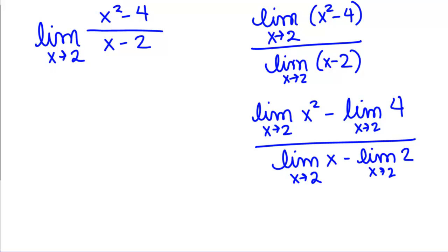I think that we can evaluate each of these limits at this point. The limit as x goes to 2 of x squared is going to be 4. The limit as x goes to 2 of 4, well that's just a constant, so it's 4 divided by the limit as x goes to 2 of x is 2 minus the limit as x goes to 2 of 2, that's a constant, so it's going to be 2.